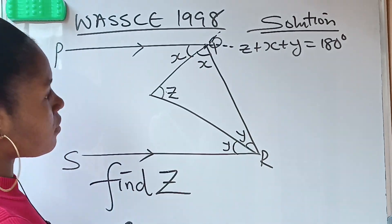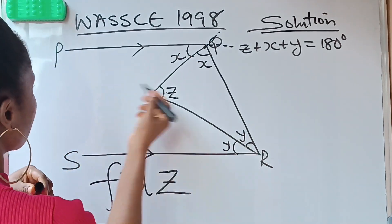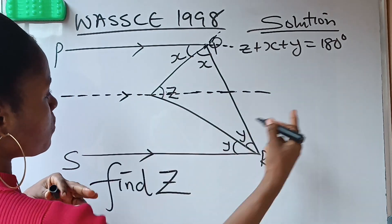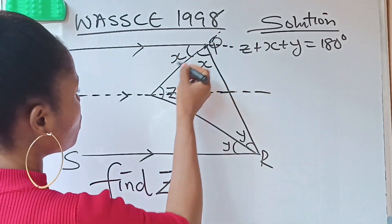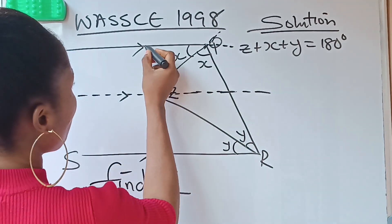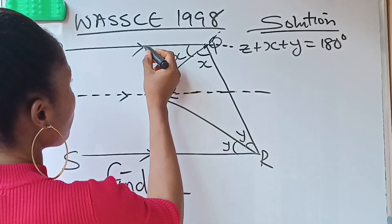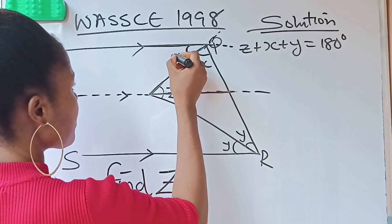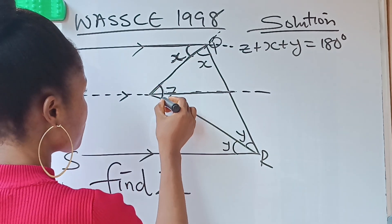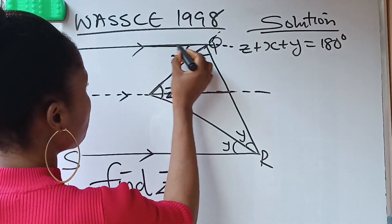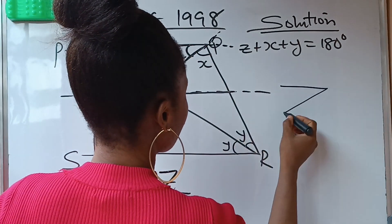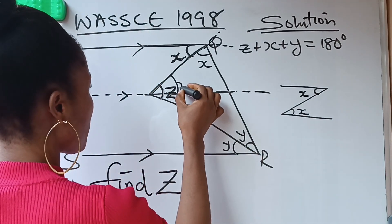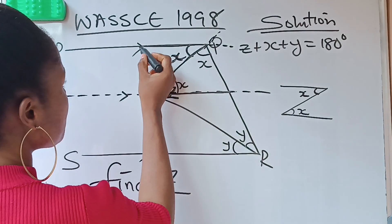When you have this type of problem, drop another parallel line to cross at this point. Now with this second parallel line, you can see that a Z-shape is formed. The first Z gives us angle x — so the upper part of that position is also x, because alternate angles are equal. We have established that this angle is x.